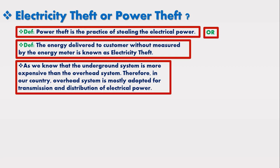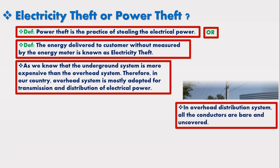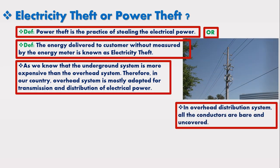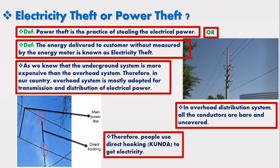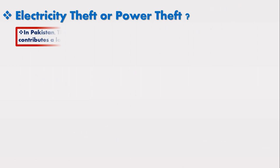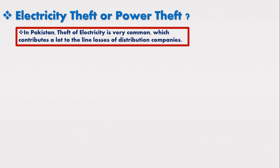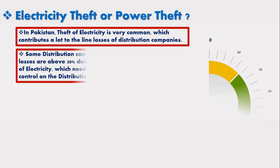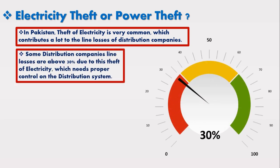As we know, the underground system is more expensive than the overhead system. Therefore, in our country, the overhead system is mostly adapted for transmission and distribution of electrical power. In the overhead distribution system, all the conductors are bare and uncovered as shown in the figure. Therefore, people use direct hooking, commonly known as kunda, to get electricity as shown in the figure. In Pakistan, theft of electricity is very common, which contributes a lot to the line losses of distribution companies. Some distribution companies' line losses are above 30% due to this theft of electricity, which needs proper control on the distribution system.